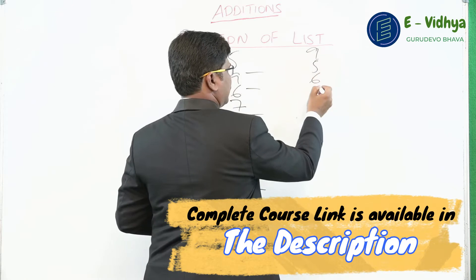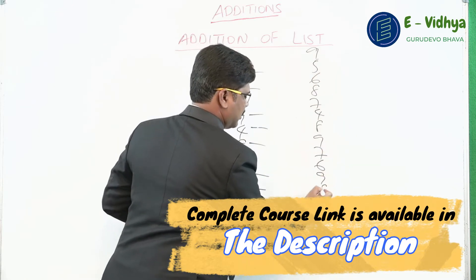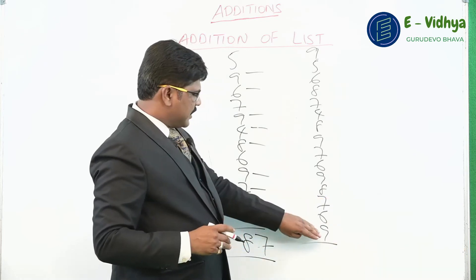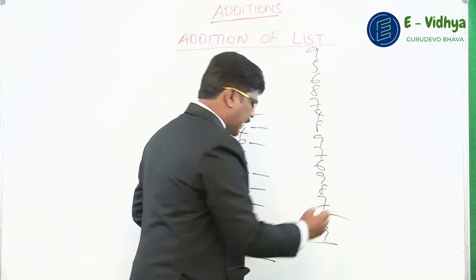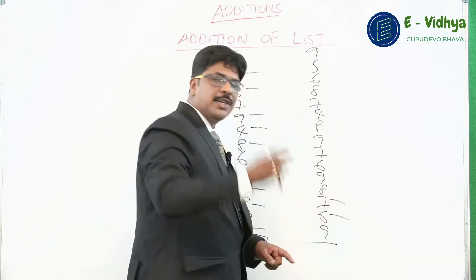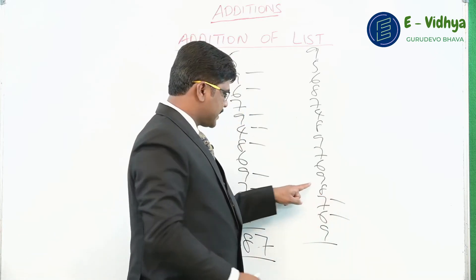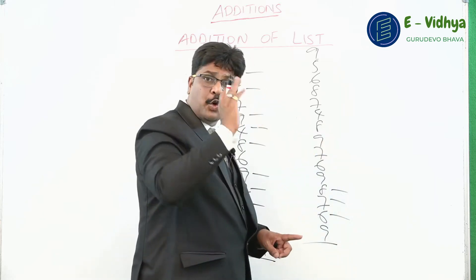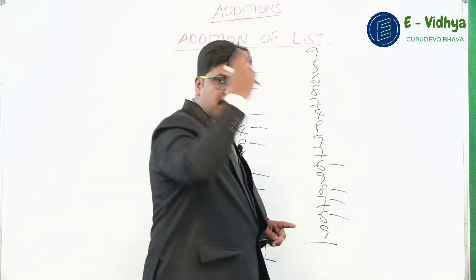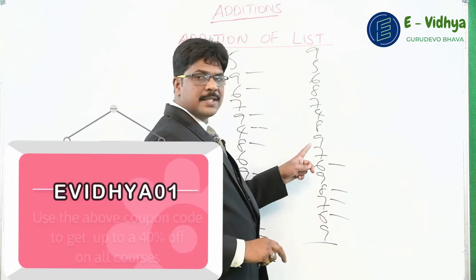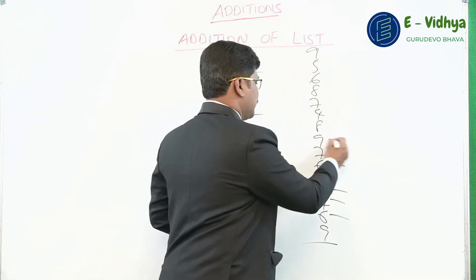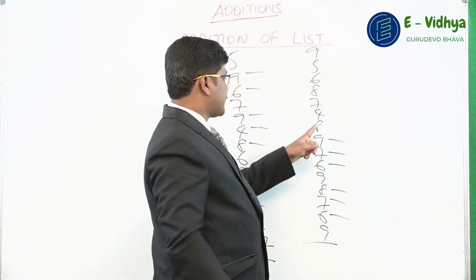Let's take one more example. We start from bottom to top. 9 plus 6 you get 15 — put a dash and hold 5 in the mind. 5 plus 7 is 12 — dash and 2 in the mind. 2 plus 8 is 10 — for 10 just put a dash and go with the soft number. Then again: 9 plus 6 you get 15 — dash, 5 in the mind. 5 plus 7 is 12 — dash, 2 in the mind. 2 plus 9 is 11 — dash, 1 in the mind.